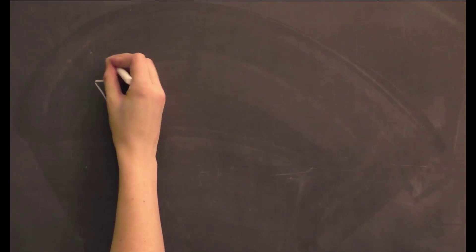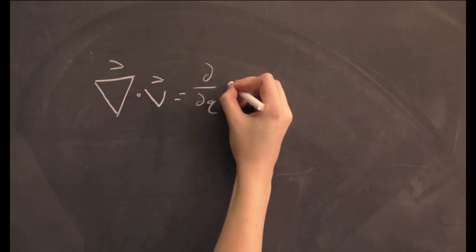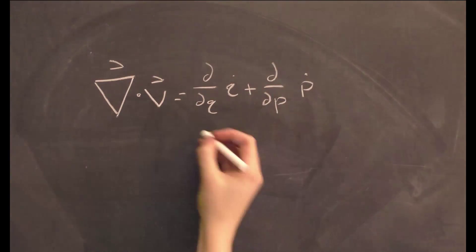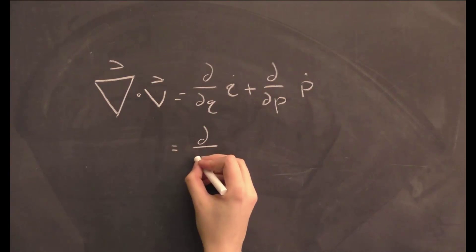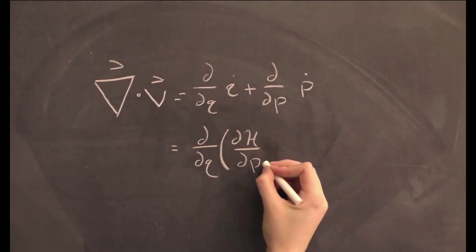Examining the integrand and using the divergence theorem, we see that the divergence of V is equal to d dQ q dot plus d dP p dot, which is equal to d dQ dH dP plus d dP negative dH dQ.